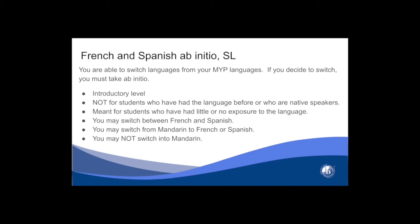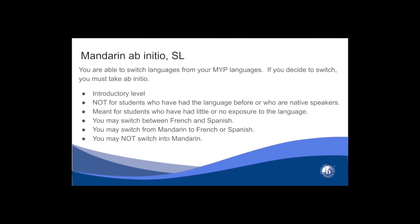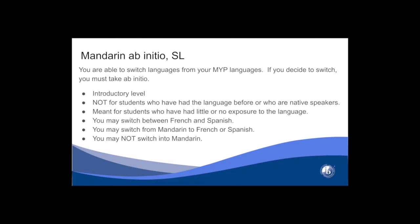You may switch between French and Spanish. You may switch from Mandarin to French or Spanish, but you may not switch into Mandarin from French or Spanish. French and Spanish Ab Initio standard level are organized around five themes, and each theme will have four prescribed topics. It's through these topics that you are taught vocabulary and grammatical structures. If you are currently taking Mandarin, you are able to switch over to French or Spanish. Mandarin is organized into these themes and then has the four prescribed topics where you are taught your vocabulary and grammatical structure.